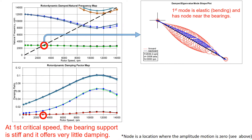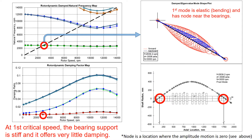If you look into the first mode shape carefully, the first mode is elastic and the node point is near the bearing. Please note that the node is a location where the amplitude motion is zero, as you could see on the bottom right figure. This indicates that the bearing is stiff and it offers very little damping at the first critical speed. The damping ratio map is shown in the left bottom figure and it is showing a low damping ratio from the bearing support.